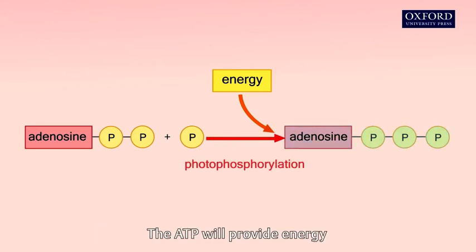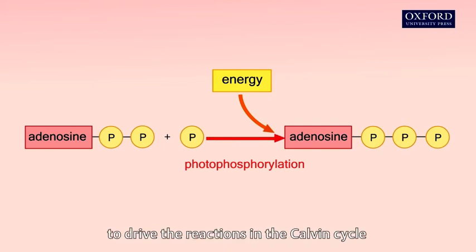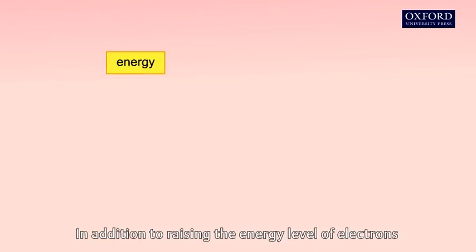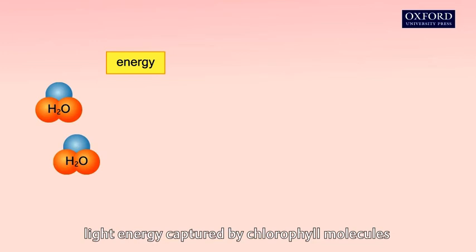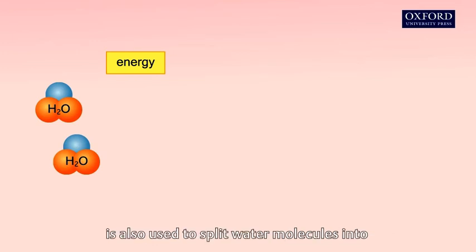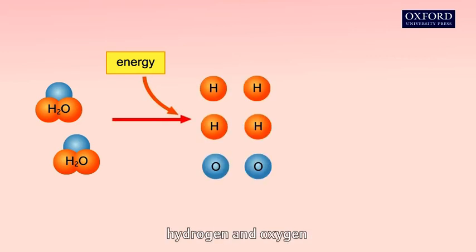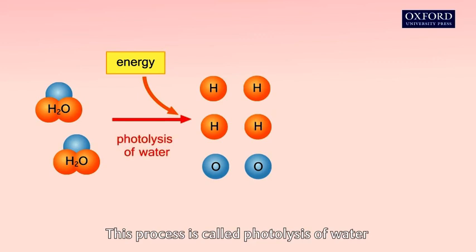The ATP will provide energy to drive the reactions in the Calvin cycle. In addition to raising the energy level of electrons, light energy captured by chlorophyll molecules is also used to split water molecules into hydrogen and oxygen. This process is called photolysis of water.